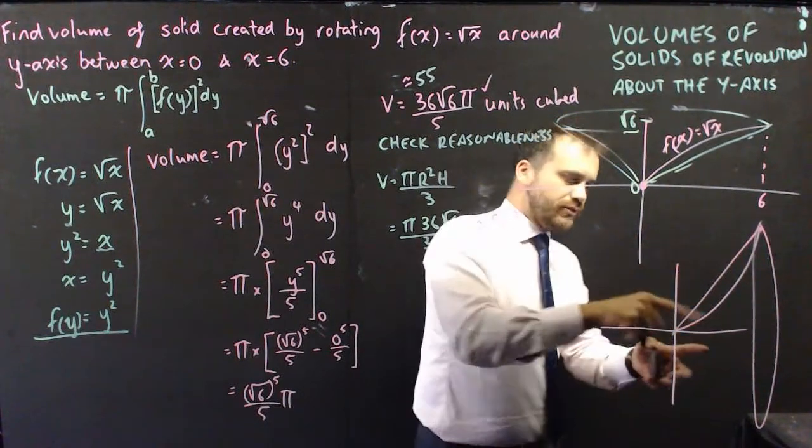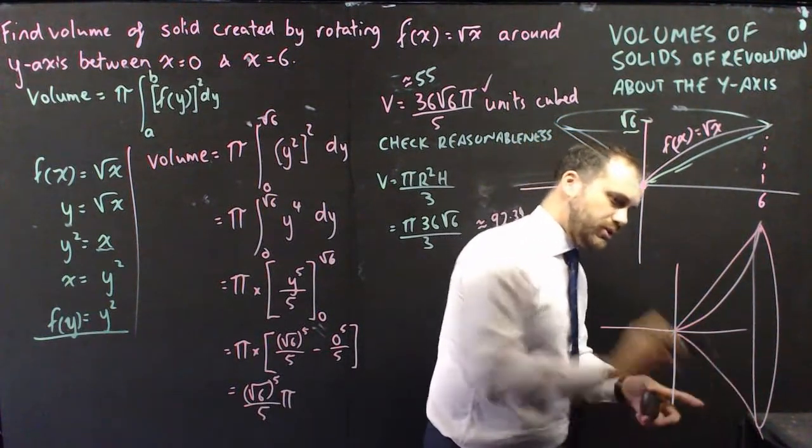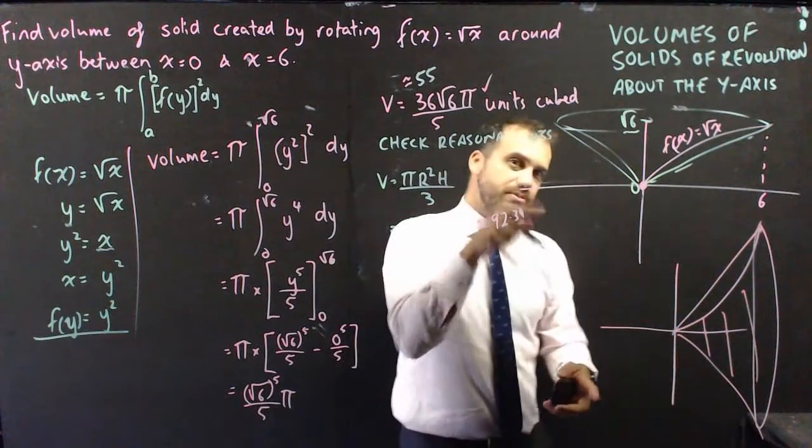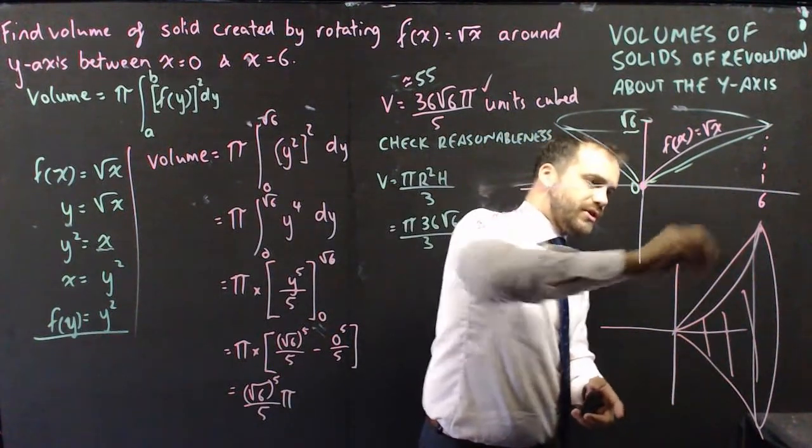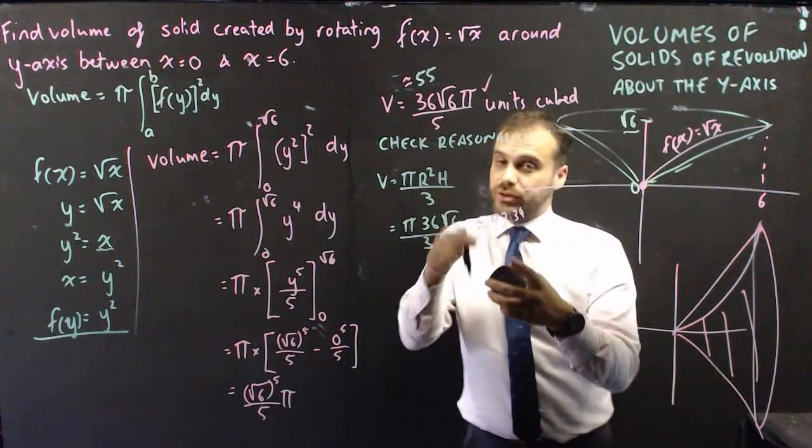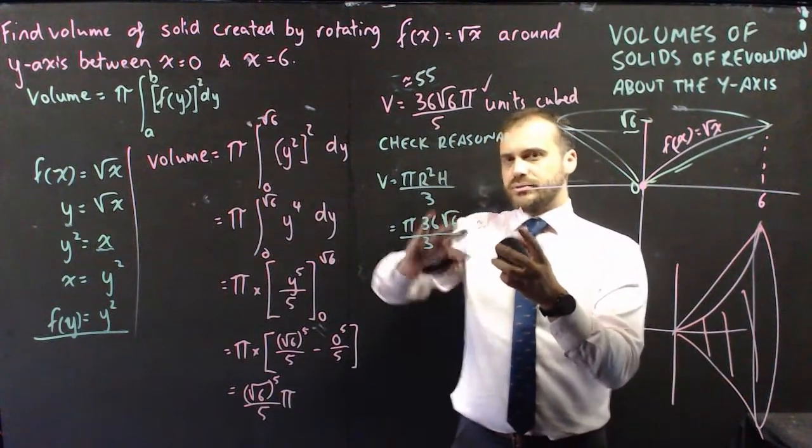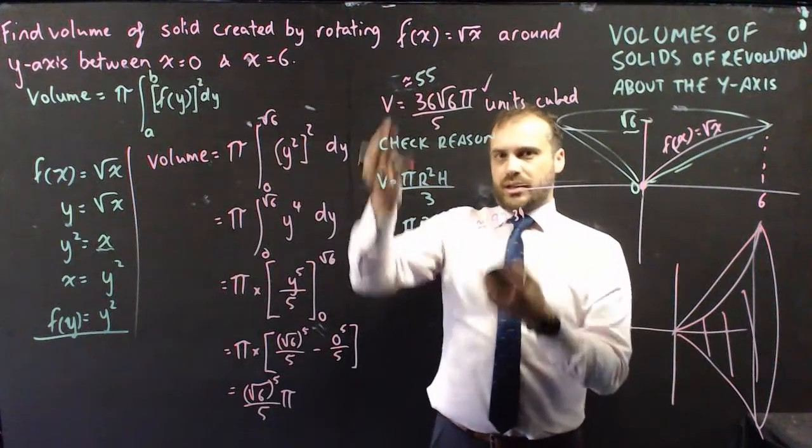So we definitely expect the volume of solid of revolution to be smaller than the cone. And I think that this is going to curve enough that the volume is going to be almost, almost, not quite, a half.